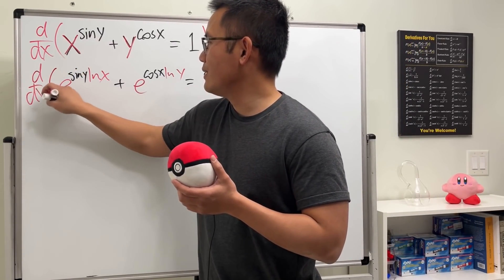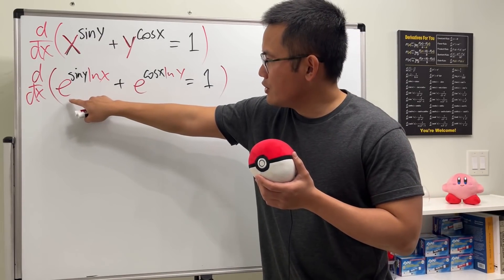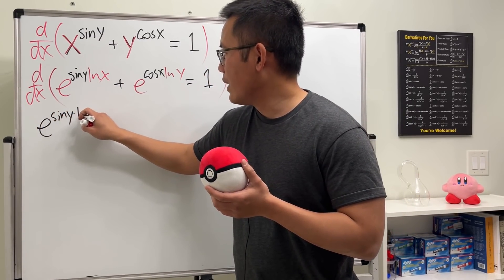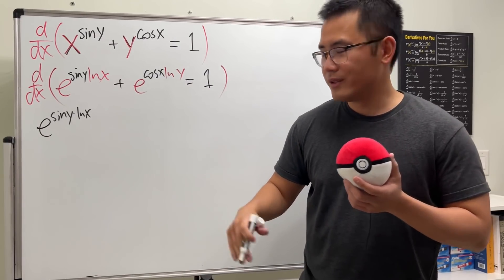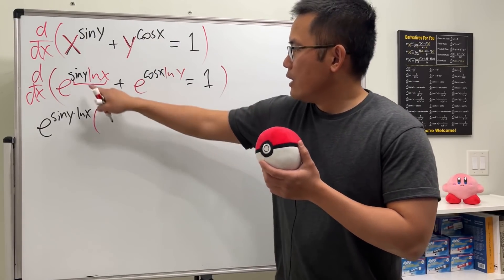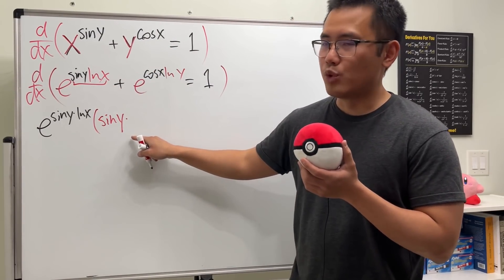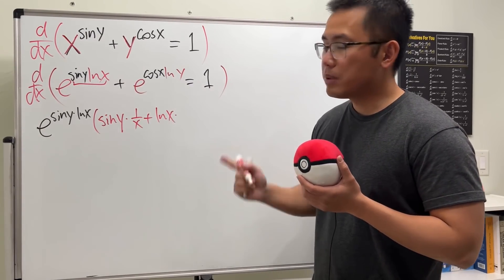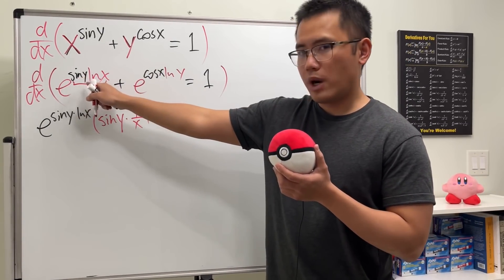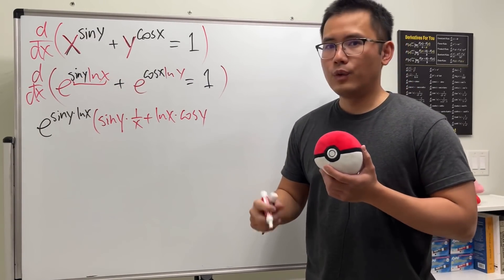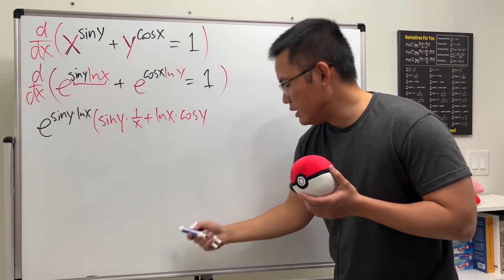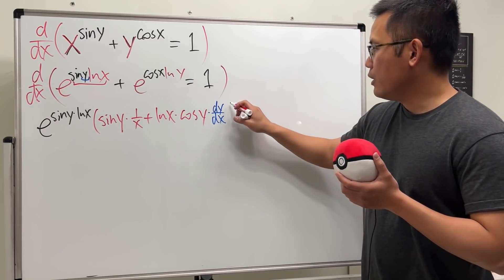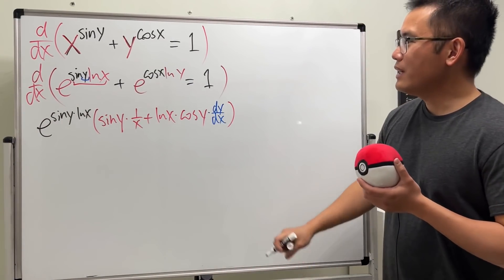Differentiating the first term: e^(sin y · ln x) repeats as a factor, so we write e^(sin y · ln x) and then apply the chain rule — which gives us the product rule inside. Keep the first function sine y and multiply by the derivative of the second, which is 1/x. Then add the second function ln x multiplied by the derivative of sine y, which is cosine y times dy/dx (since y is a function of x).